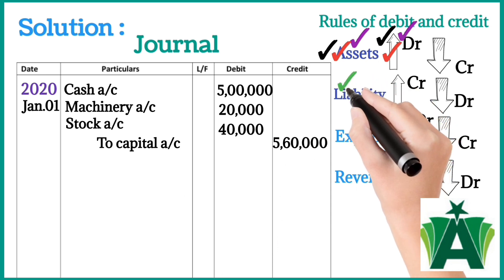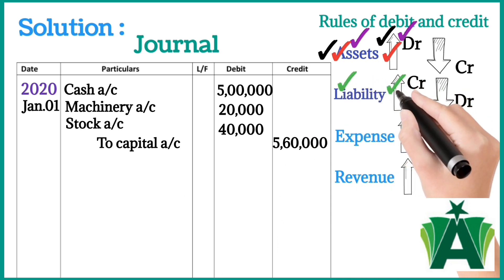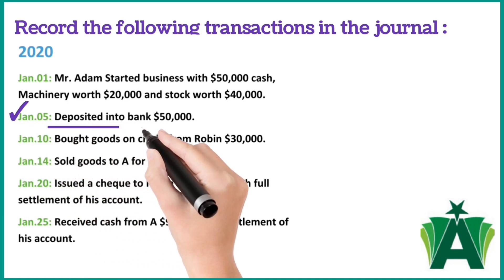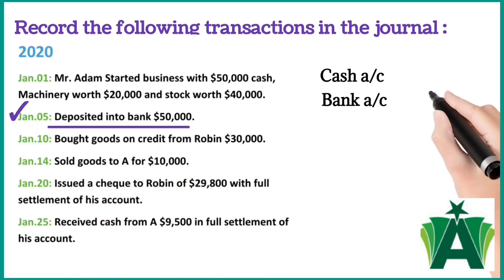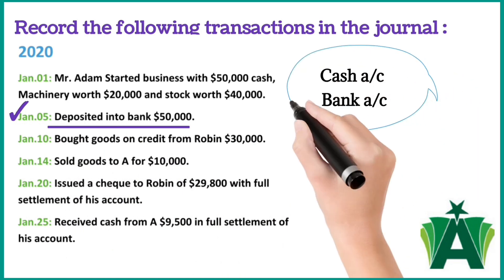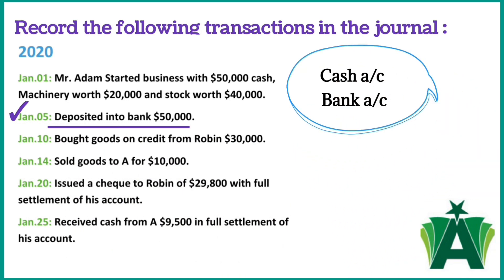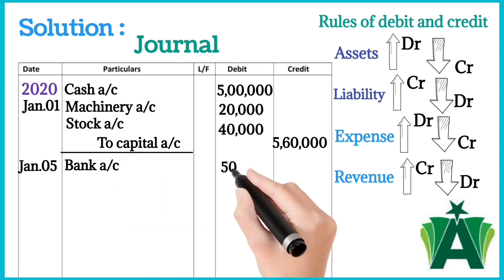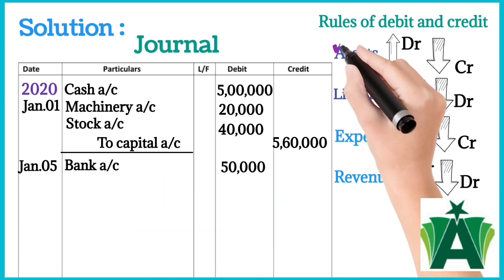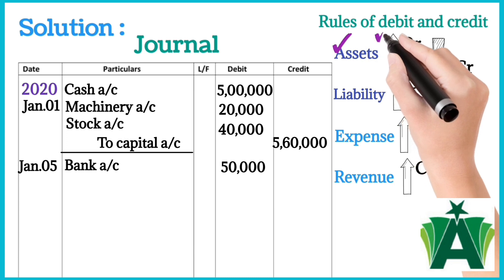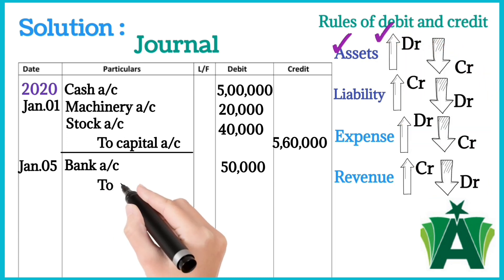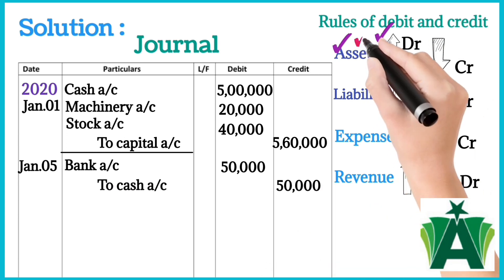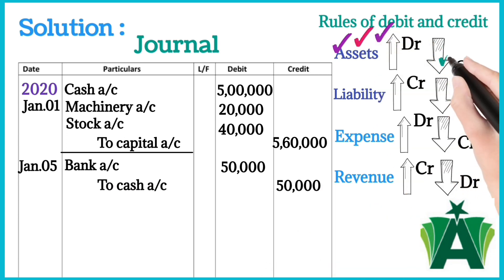January 5: Deposited into bank $50,000. Here two accounts are involved: cash account and bank account. Bank account debit with $50,000 — reason: bank account nature is an asset and increases in business. To cash account credit with the same amount — reason: cash is an asset and decreases in business.